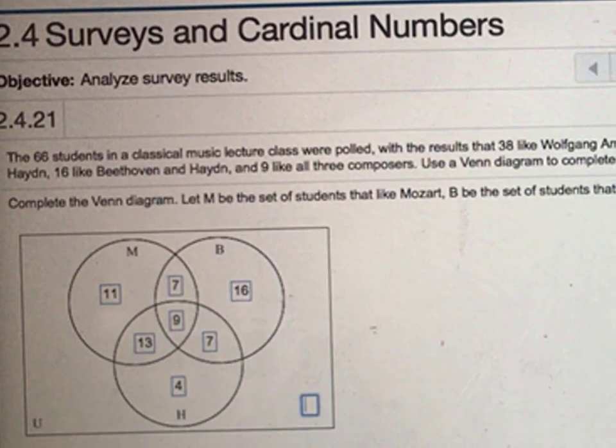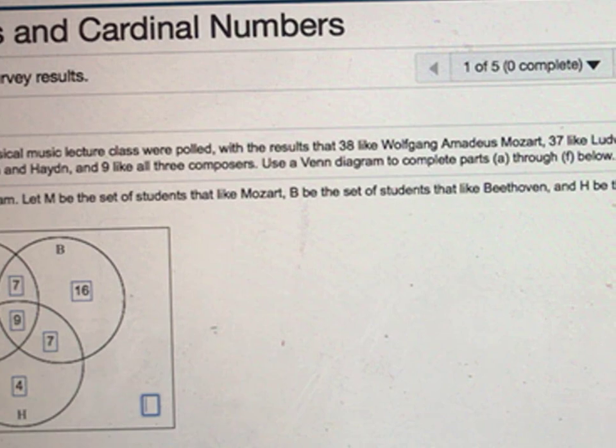And the first thing is complete the Venn diagram. Let M be the set of students that like Mozart, B be the set of students that like Beethoven, and H be the set of students that like Haydn.